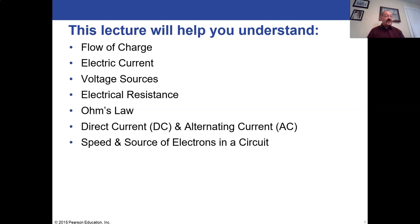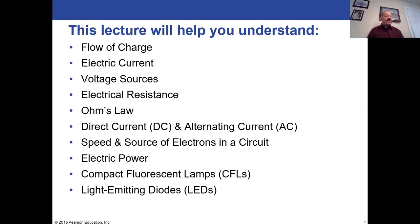Then we'll talk about the difference between direct current, DC, and alternating current, AC. We'll discuss the speed and source of electrons in the circuit — and it's not what you think. Then we'll talk about electric power, which we've defined as an amount of energy per time, but it can also be calculated differently when looking at current and voltage. Then we'll talk about newer devices that make more efficient use of electric current for light: the compact fluorescent lamps, the CFLs, and the light-emitting diodes, the LEDs.